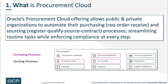What is Procurement Cloud? Oracle's Procurement Cloud offering allows public and private organizations to automate their purchasing — meaning record or receive — and sourcing — meaning register, qualify, source, contract processes — streamlining routine tasks while enforcing compliance at every step. You can see in the graph at the bottom an attempt to delineate which of the different processes are purchasing and which are sourcing.